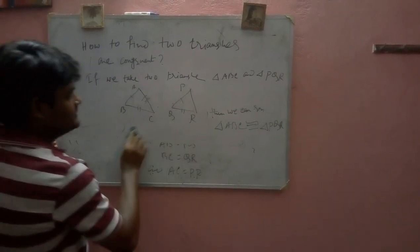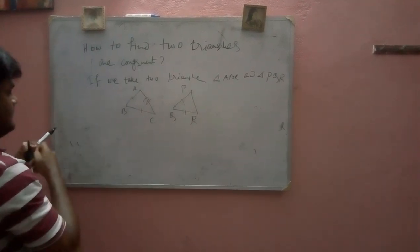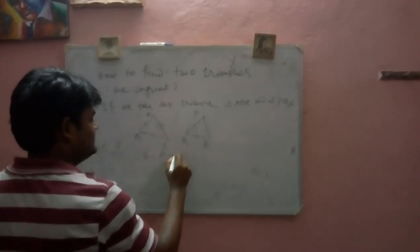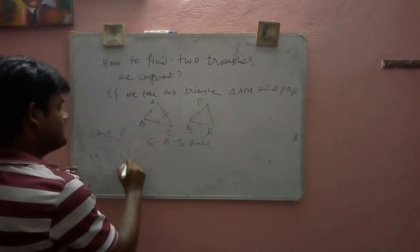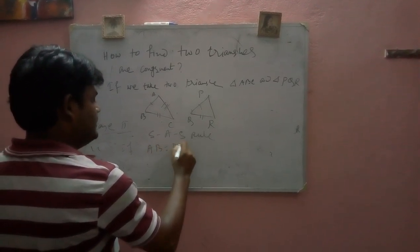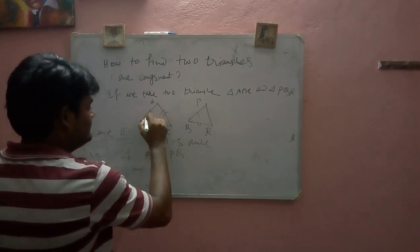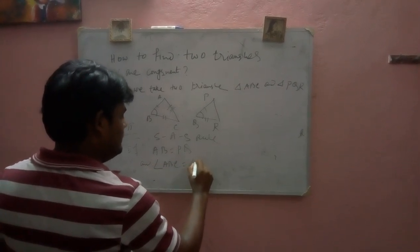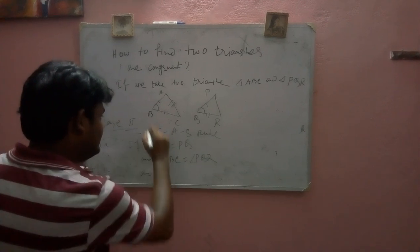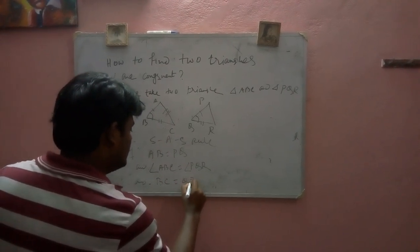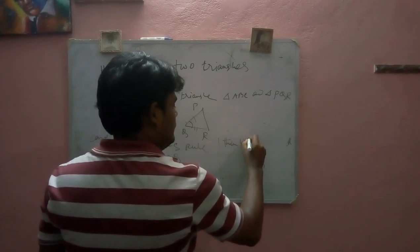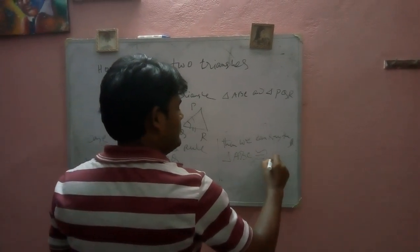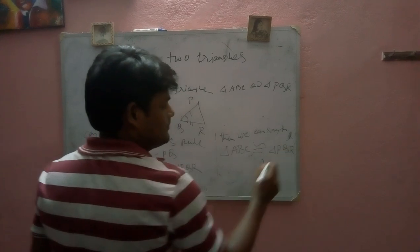Case two, that is Side-Angle-Side rule. How is it? If AB is equal to PQ, and suppose this angle and this angle are the same, that is angle ABC is equal to angle PQR, and BC is equal to QR, then we can say that triangle ABC is congruent to triangle PQR.